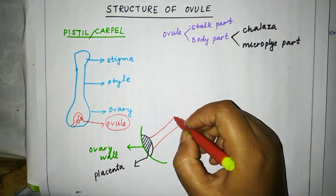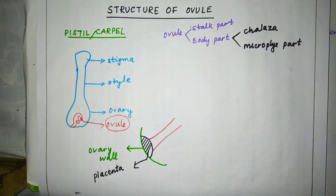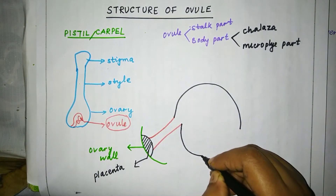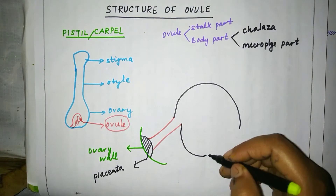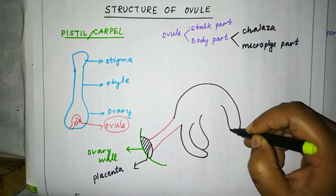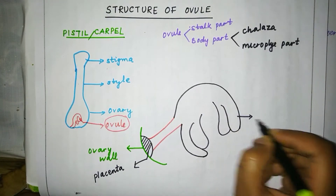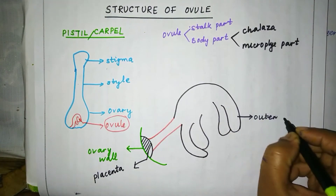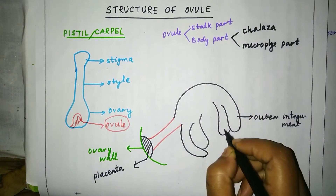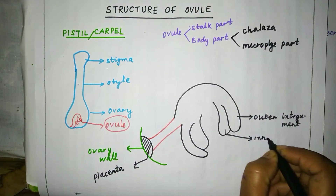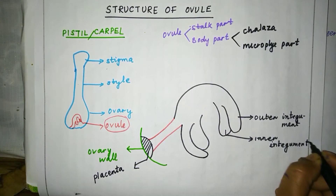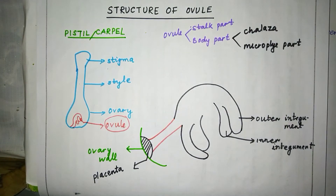The stock-like structure by which the ovule is attached is known as funicle, and this is the body part. The body has a layer to protect or cover the ovule known as integument. This is the outer integument and this is the inner integument.